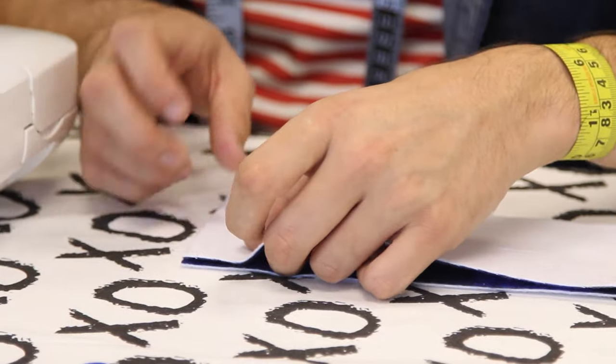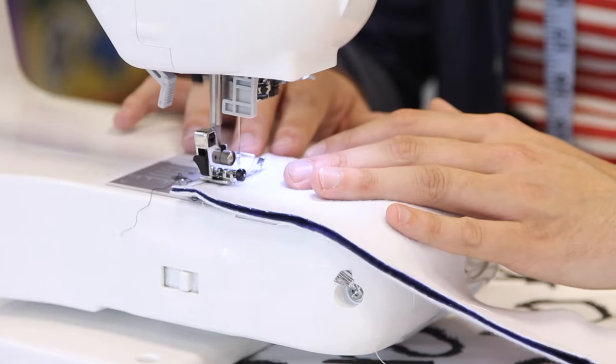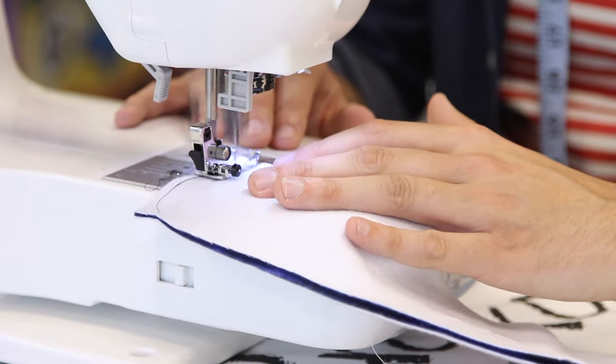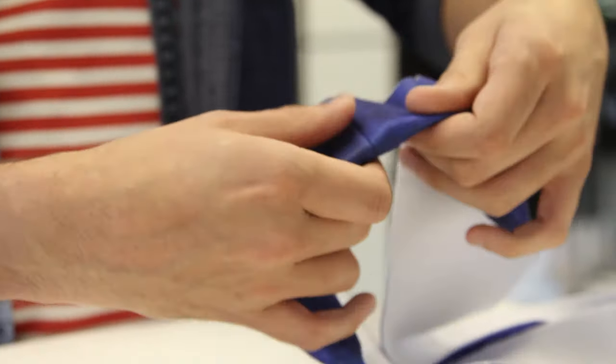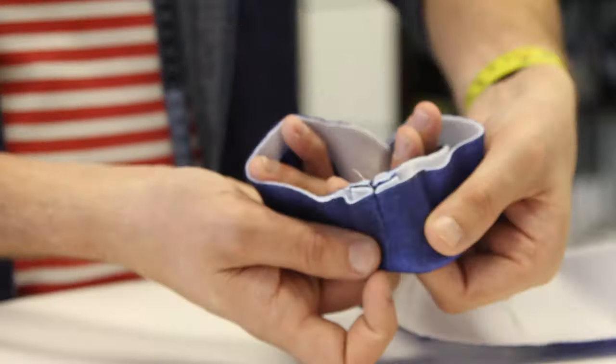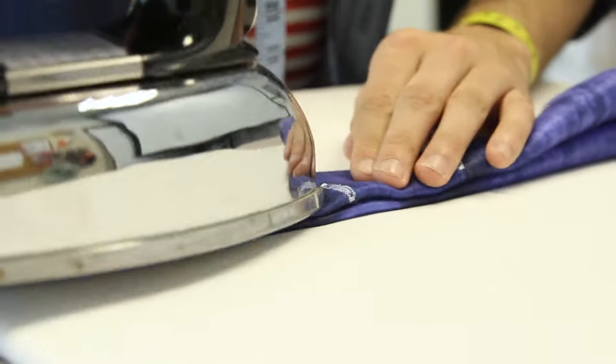With the right sides together, stitch the front and back waistband pieces at the side seams. Fold the waistband so that the wrong sides are together and press.